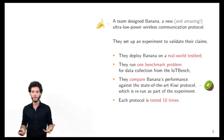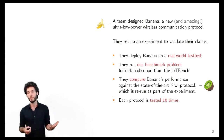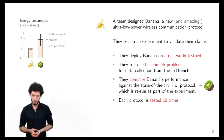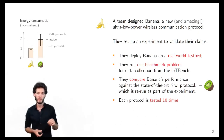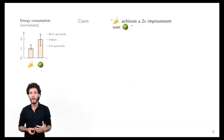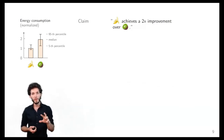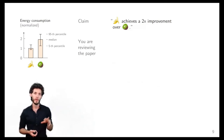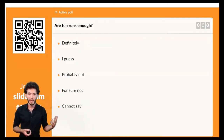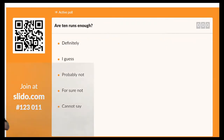They take a benchmark problem available in this domain and compare to the state of the art, let's call it 'QE.' They run each protocol on the testbed 10 times each. In their paper they show a plot of energy consumption on the y-axis, normalized to their protocol, and they claim that Banana achieves a 2x improvement over QE. Now, I want you to pause for a second and imagine you are reviewing this paper and you see this plot. Do you think 10 runs are actually enough to support this claim?